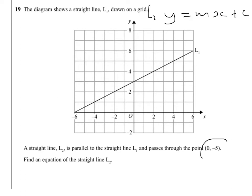Because we've been told that the point passes through (0, -5), then we know that c will be minus 5, because c is the value of y when x equals 0.